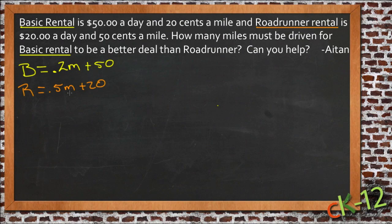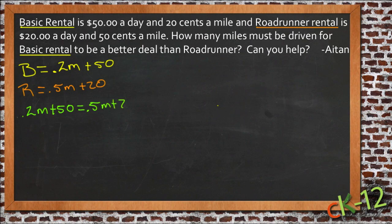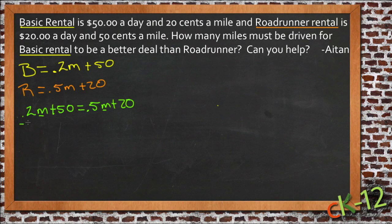All we need to do is compare these two equations to each other. So let's write them out and set them equal: 0.2M + 50 = 0.5M + 20. That will tell us the number of miles where the prices are the same. Now we just solve for M. We subtract 0.2M from both sides, and we get 50 = 0.3M + 20.